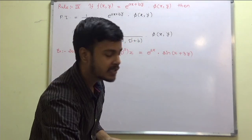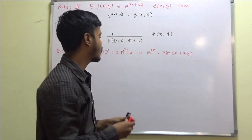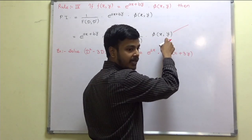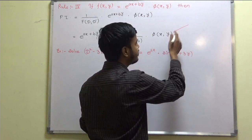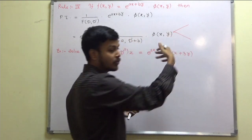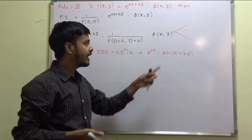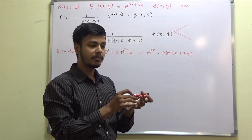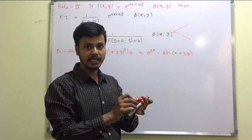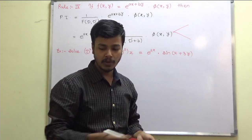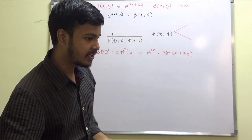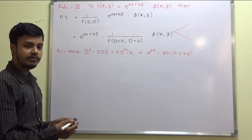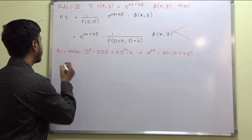Depending on φ(x,y): if it is x^m · y^n, you apply rule number 3; and if it is sin or cos, you apply rule number 2. So those are the two different possibilities we have. Let us take a problem on rule number 4.